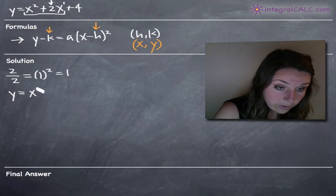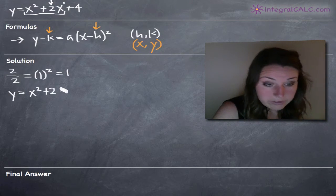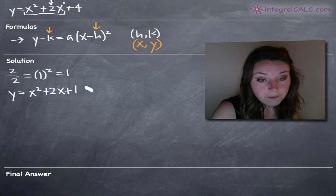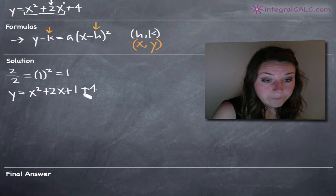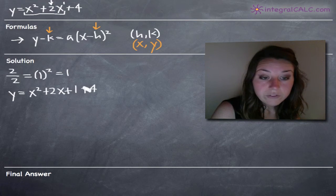So y equals x squared plus 2x plus one plus four. Importantly, because we just added one to the right-hand side, we also need to add one to the left-hand side.